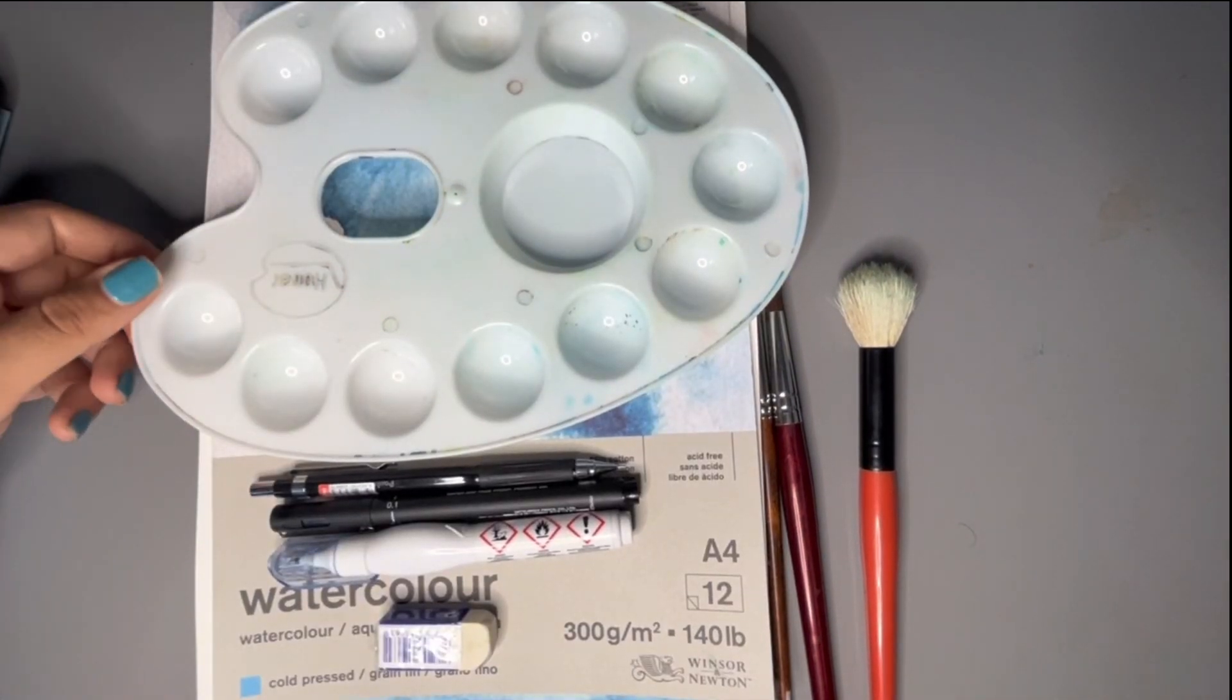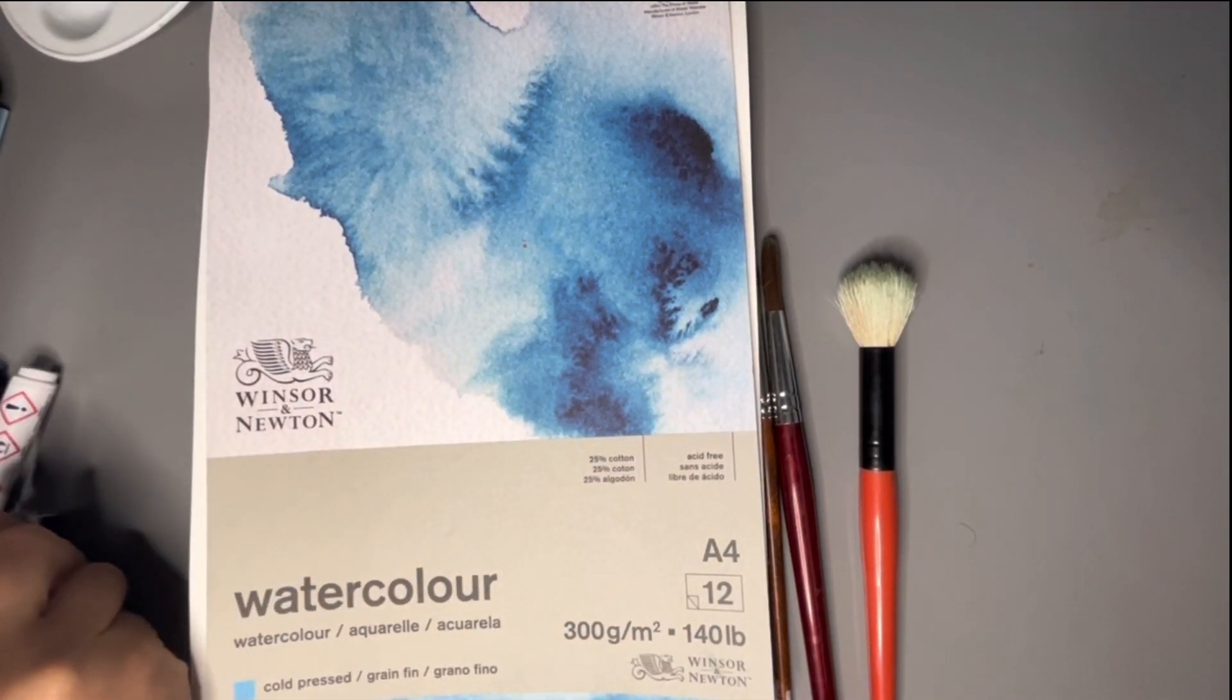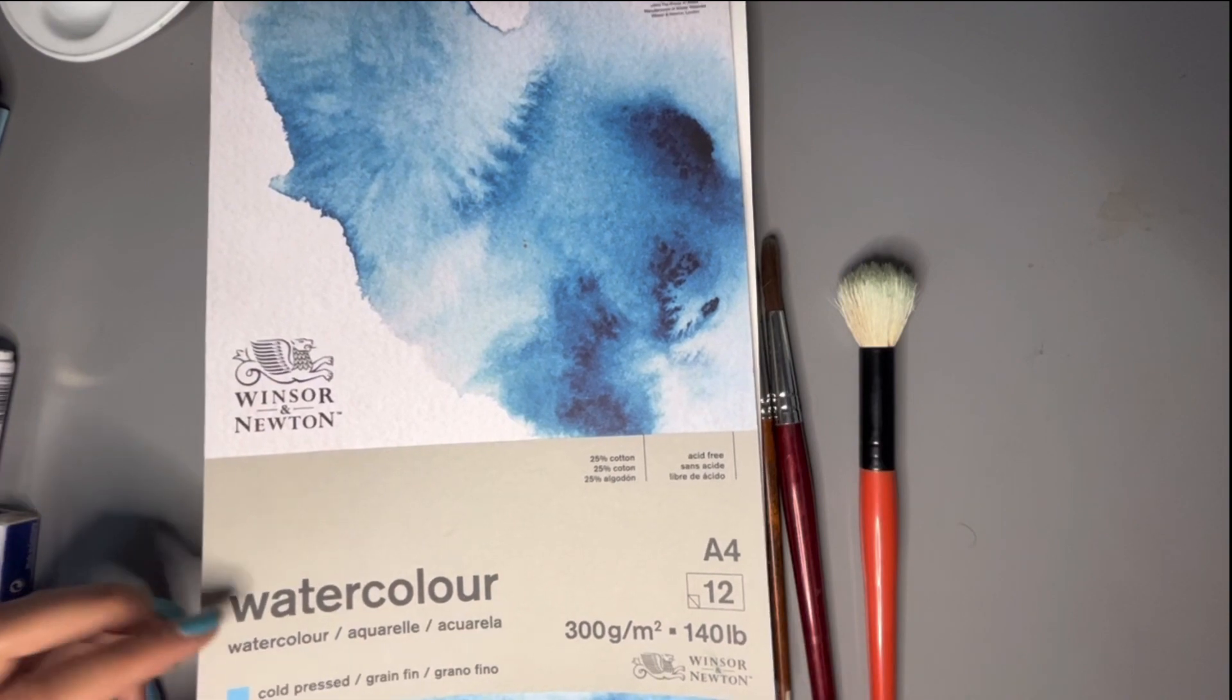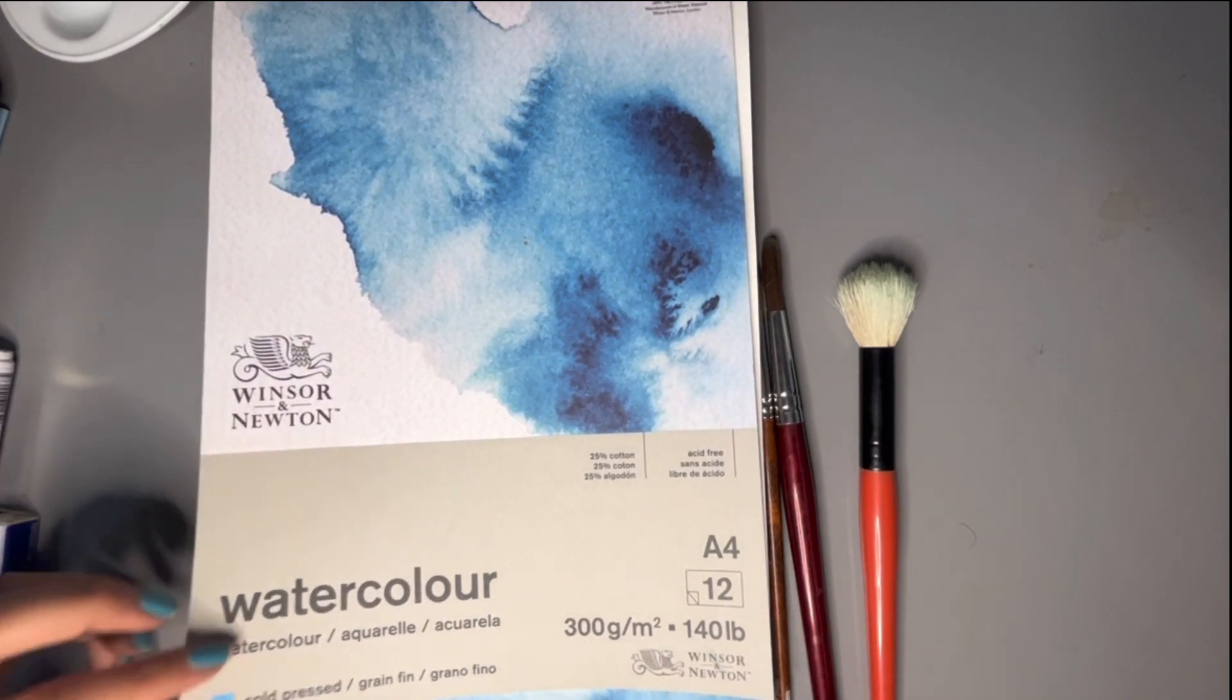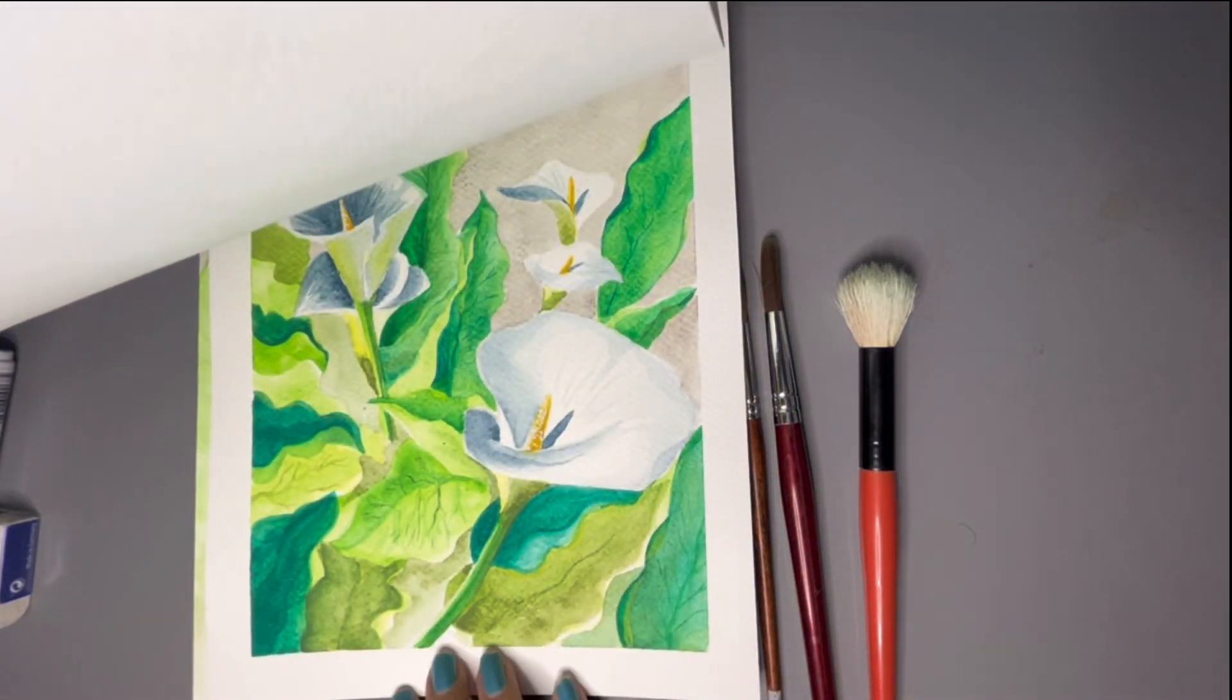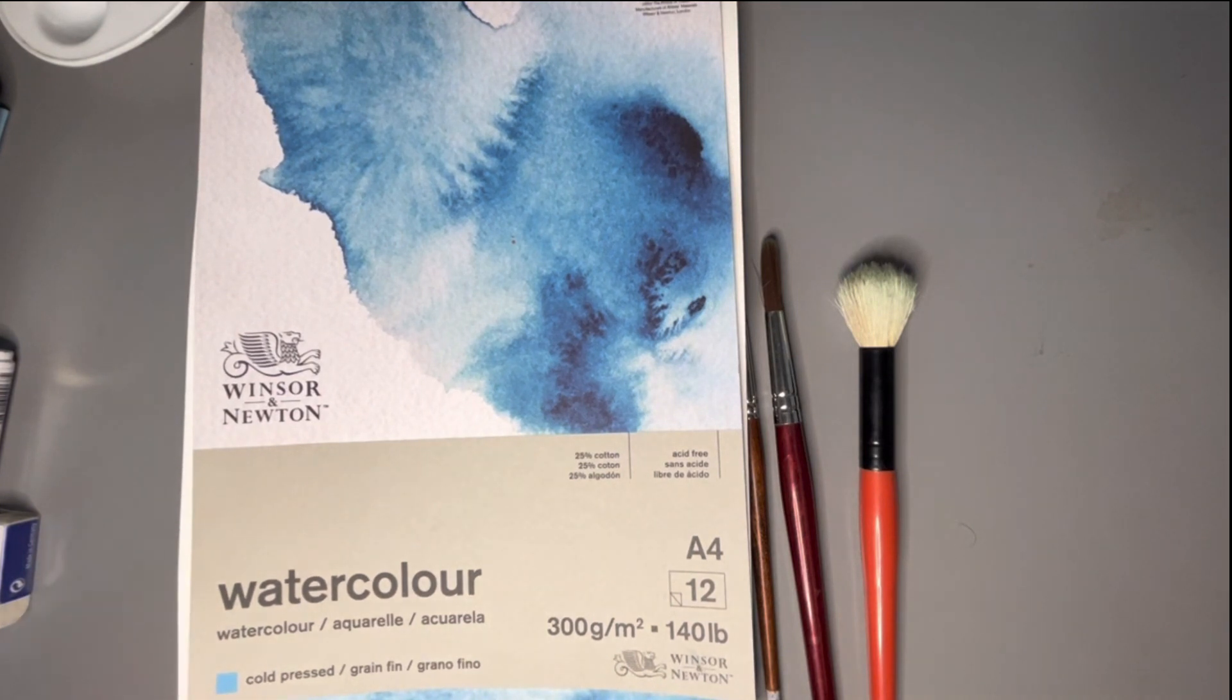The last but not the least is the paper. It is very very important for working with watercolor. We need a high gram paper. It is 200 gram and you can see my works inside it. It absorbs the water very well. So for working with watercolor you need high gram papers.